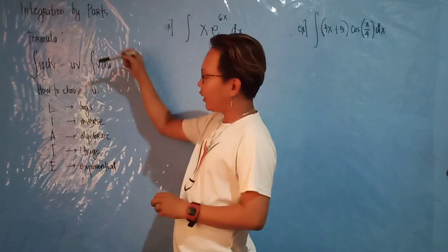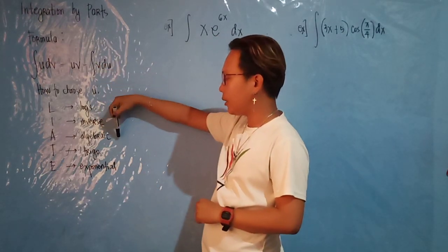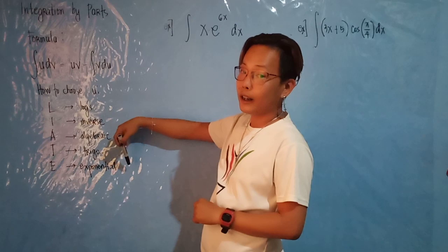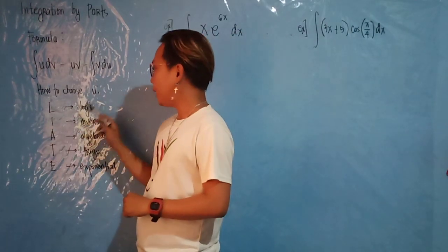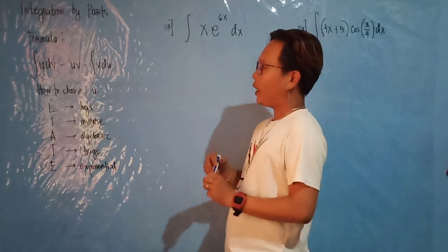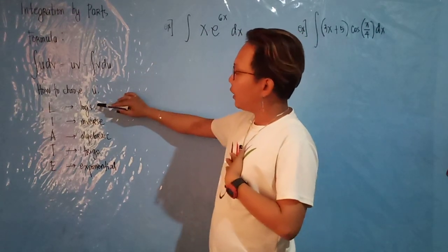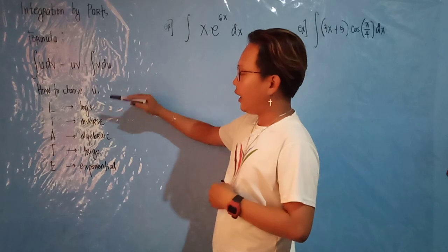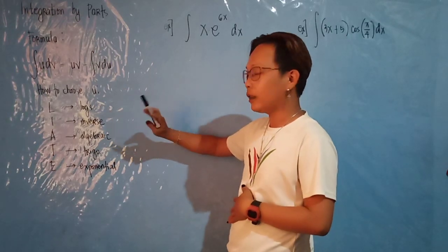It stands for logarithm, inverse, algebraic, trigonometric, and exponential. This is what you should consider to choose your u. You need to check if there's a logarithm in the equation, inverse, algebraic, trigonometric, or exponential.